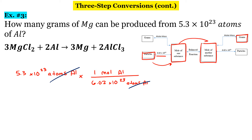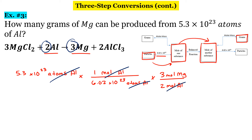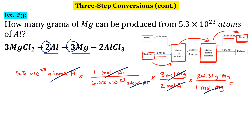Next, we're going to go from moles of aluminum to moles of magnesium. Our ratio is 2 moles of aluminum to 3 moles of magnesium, so our moles of aluminum will cancel. Finally, it's asking us for grams, so to go from moles to grams we're going to use the molar mass. One mole of magnesium — looking it up on the periodic table — is 24.31 grams of magnesium. So my moles of magnesium will cancel, and I get 32.1037.